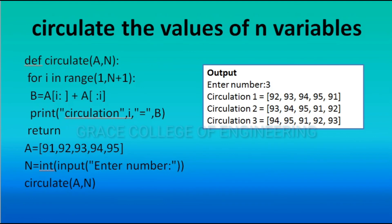Program — Circulate the Value of N Variables: def keyword defines the function named circulate with parameters a and n. Then for i in range(1, n+1), the slicing operation b = a[i:] + a[:i] is applied. Print the new list values, then return. This is the function definition.